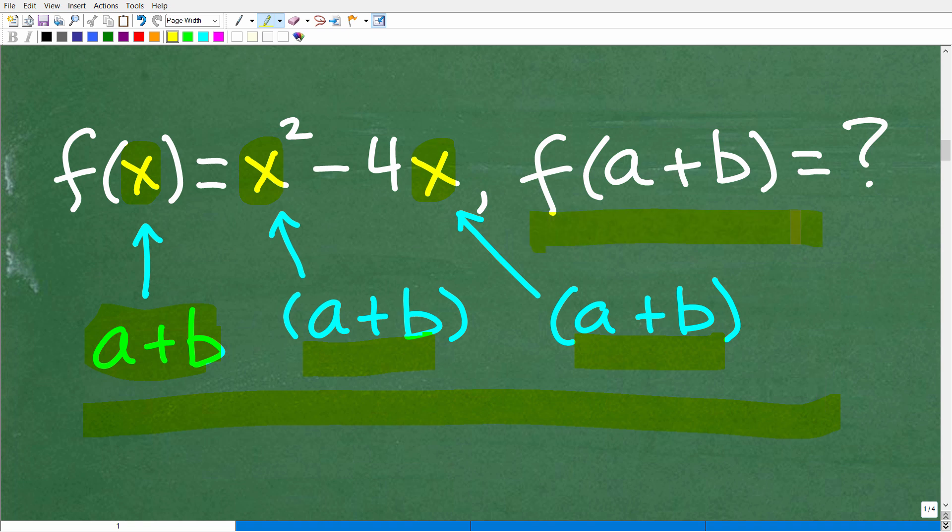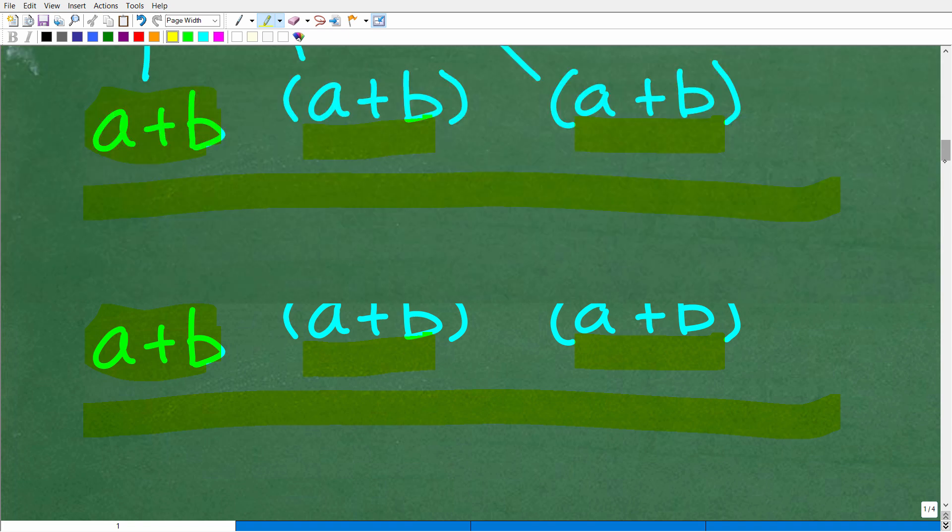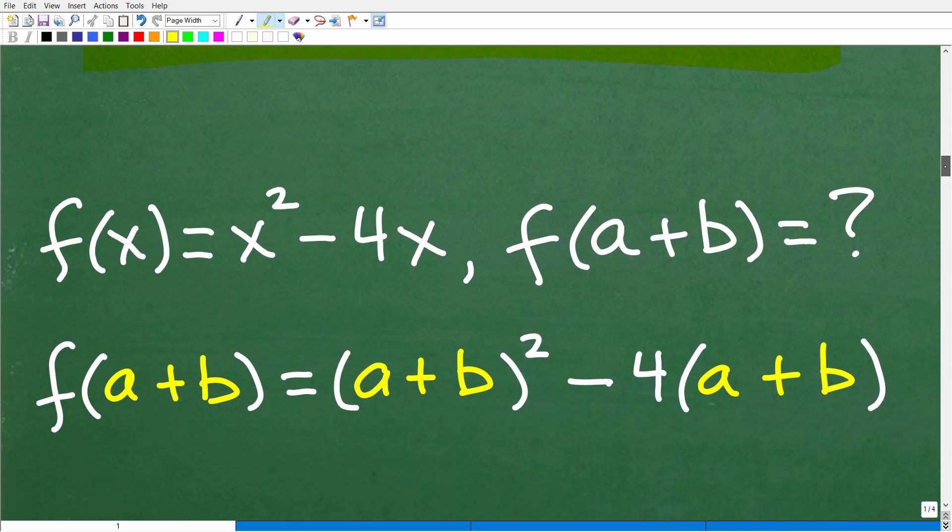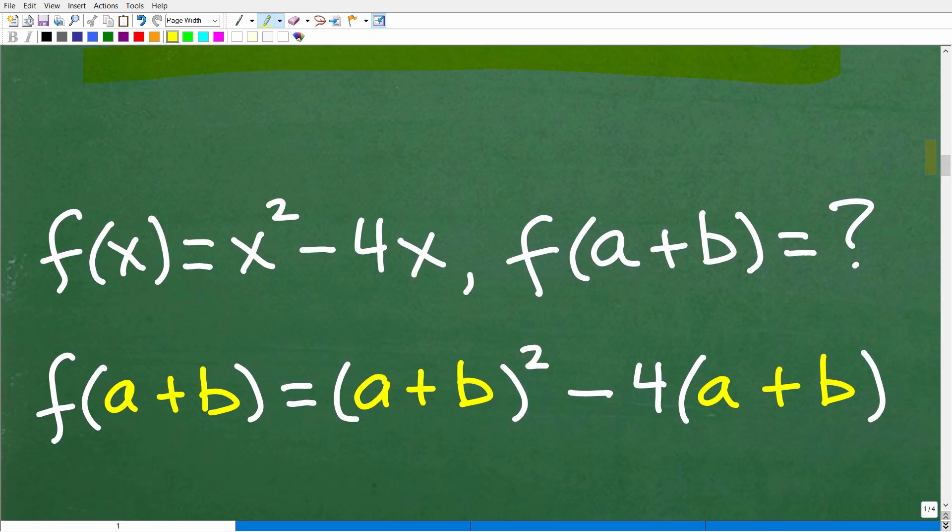We want to find f(a + b). So the algebra is going to look like this. Here is our function f(x) = x² - 4x. We want to find f(a + b). So we're going to be plugging in a + b where these x's are at, and then, of course, we're going to do all this algebra and simplify the function.